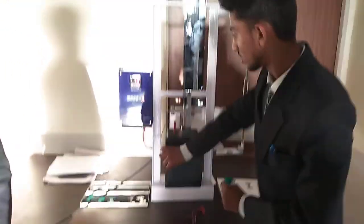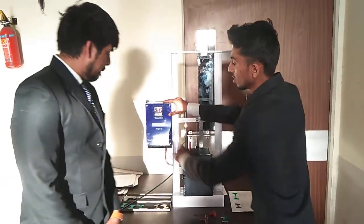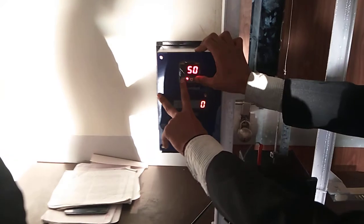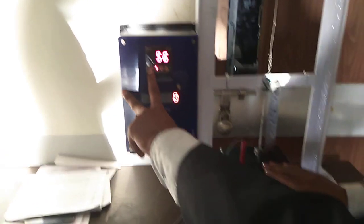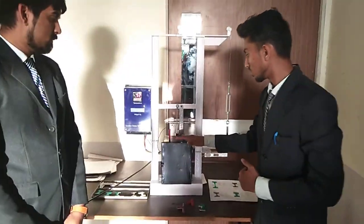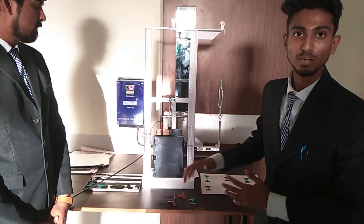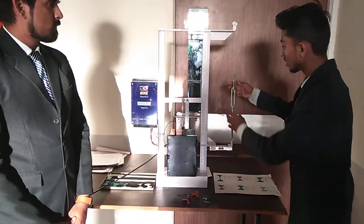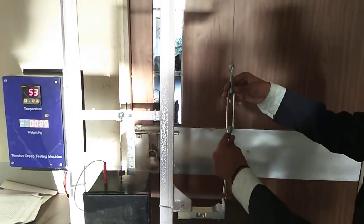After which we increase the temperature in the furnace with the help of this digital indicator. As we can see, by applying the buttons here we can increase the temperature of the furnace. Then we wait for some time to heat up the furnace to constant temperature. After some time, we apply the load on the specimen through the wire rope with the help of this turnbuckle.